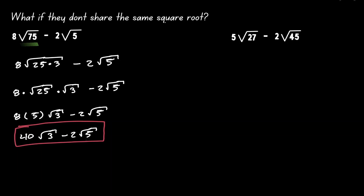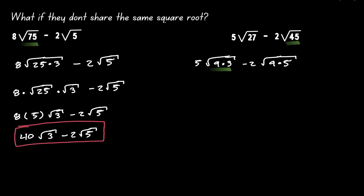Let's take a look at the example on the right. The first thing we notice is that they do not have the same value inside the square root. So before we make the conclusion of not being able to combine them, let's try to simplify each one individually. The value of 27 — notice that we can rewrite it as 9 times 3. And the value of 45 — notice that we can write it out as 9 times 5. So now we can apply the rule of roots. If we're multiplying inside the square root, we can just multiply each square root individually.